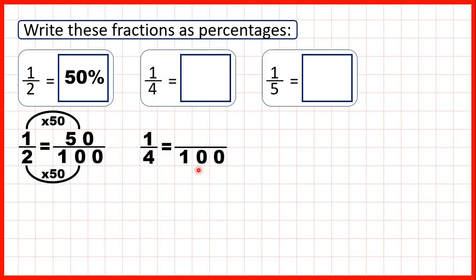Again, we need to find an equivalent fraction which has a denominator of 100. 4 times 25 is 100, because if you count up in 25s 4 times, you get 25, 50, 75, 100.